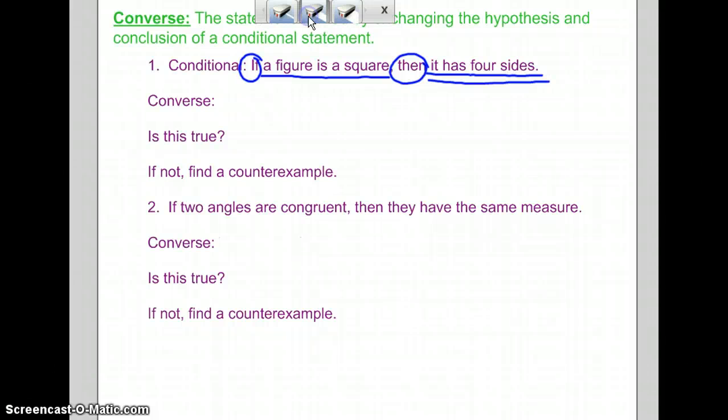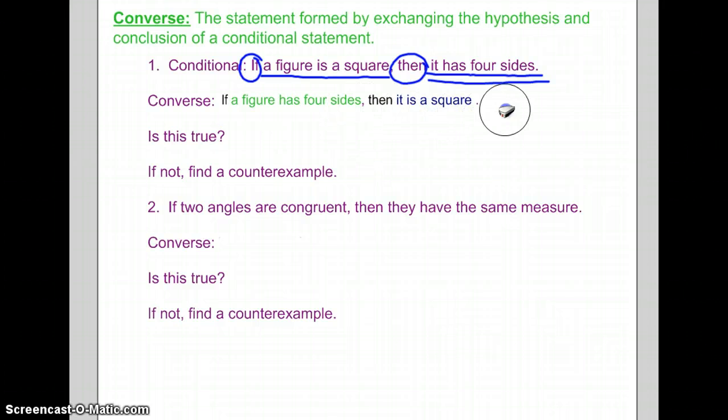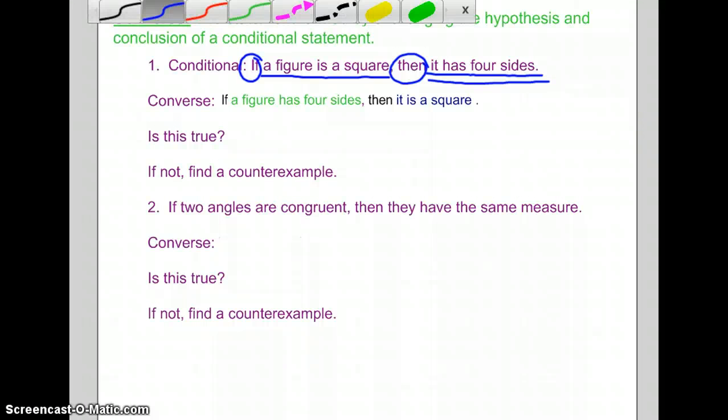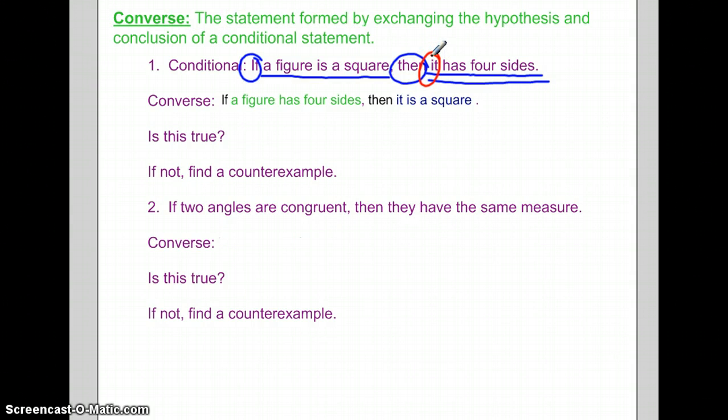Let's see how this is going to work. If a figure has four sides, then it is a square. Notice how we did not use the terms they, it, or anything like that. We said if a figure has four sides. This it right here, we eliminated it. And we rewrote it as if a figure has four sides, then it is a square. Is this statement true? Is this true? No. Why is it not true? We have to find a counter example. Can our counter example be a rhombus, or a parallelogram, or a kite? Any geometric figure that has four sides, but it's not a square. Rectangle? I'm sure you can think of many more.